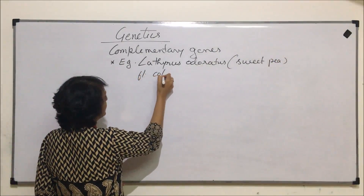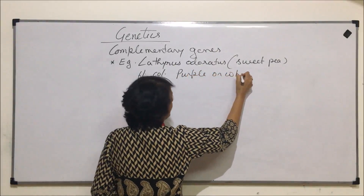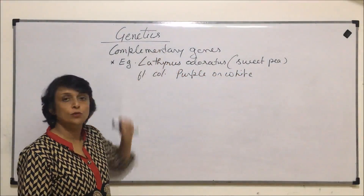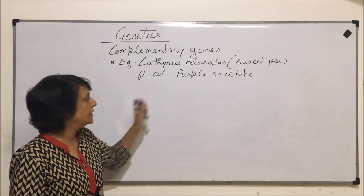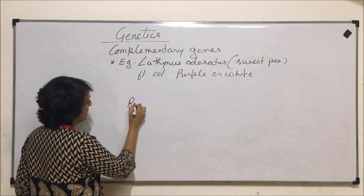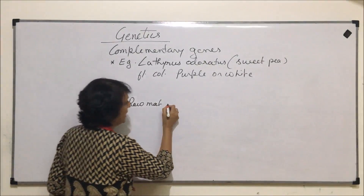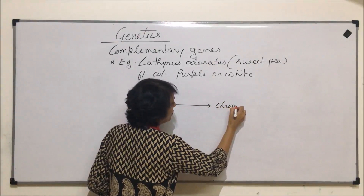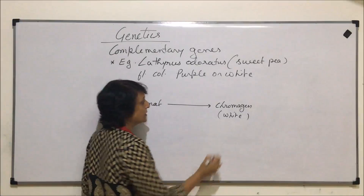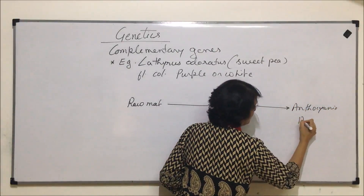We are talking of flower color — purple or white. To understand how the purple color is formed, there is a simple reaction: a raw material, also called the precursor, is converted into a chromogen which is white, and this chromogen is then converted into anthocyanin, which is the purple color.